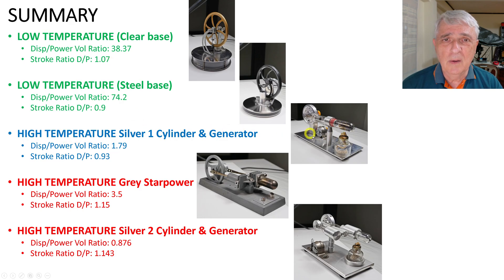The last one, this one - now you say, why did I put this in the middle? Because the specifications are actually somewhere between these and these. The silver one-cylinder and generator, the displacement power volume ratio is 1.79, stroke ratio is 0.93. You can see it's closer, sort of closer to these, at least with the stroke ratio.